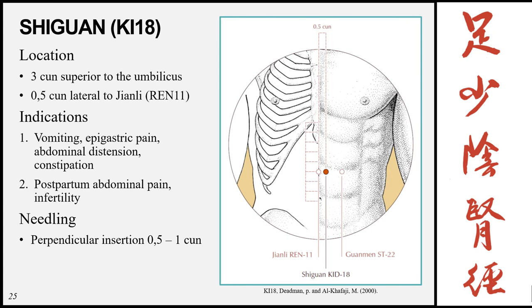Shiguan, Kidney 18, is located 3 cun superior to the umbilicus, 0.5 cun lateral to Jianli (Ren 11), also 0.5 cun lateral to the midline. Indications: vomiting, epigastric pain, abdominal distension, constipation, postpartum abdominal pain, and infertility. Needling: perpendicular 0.5 to 1 cun.